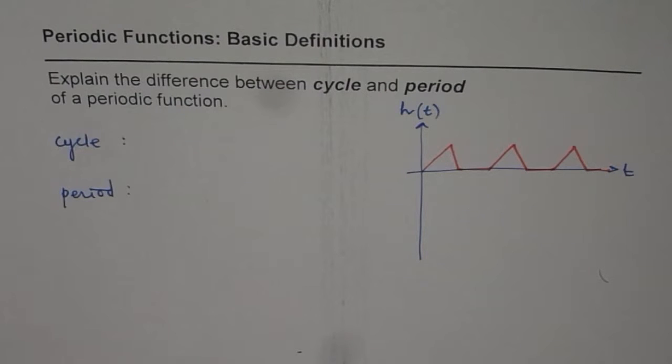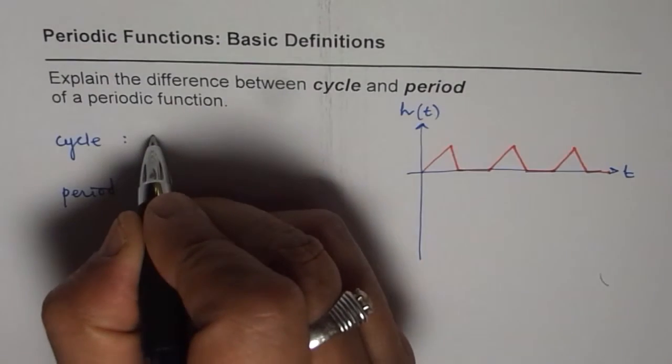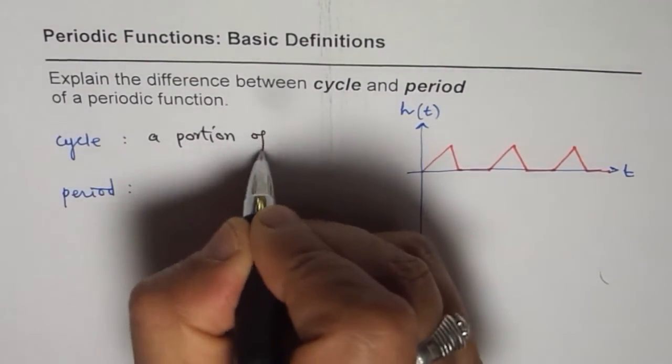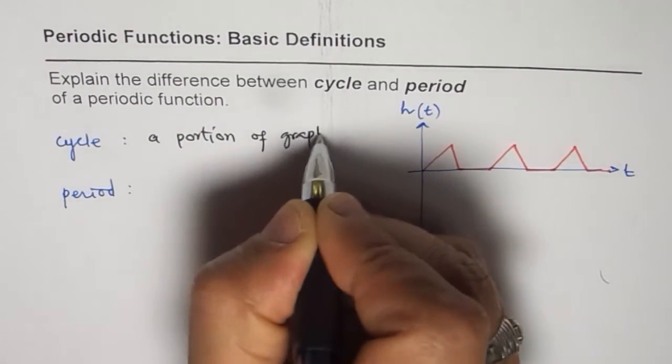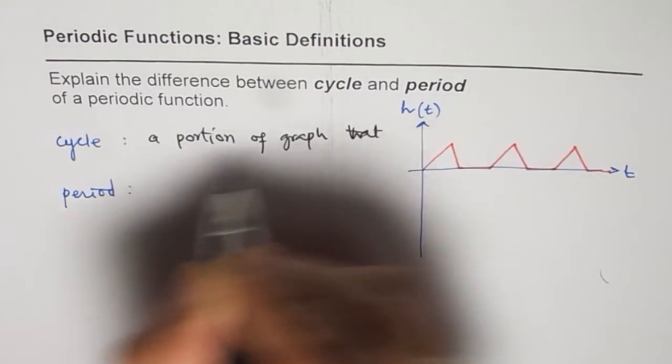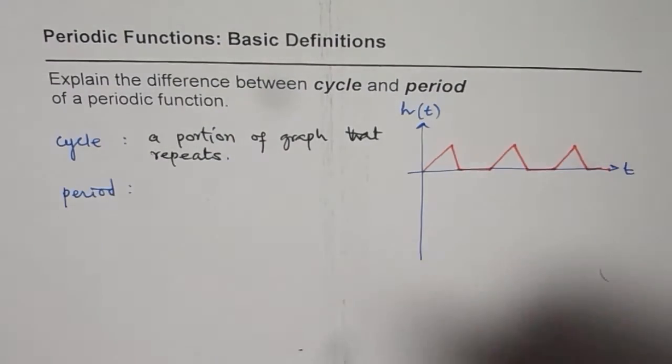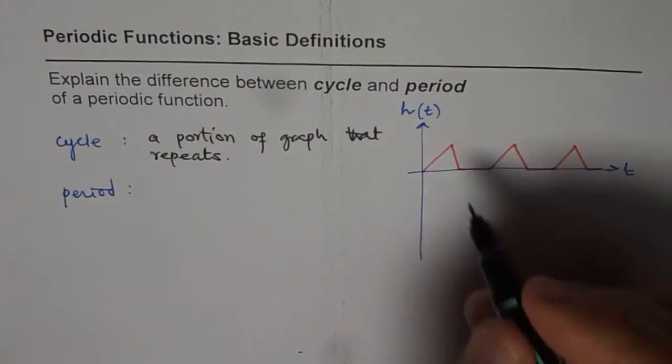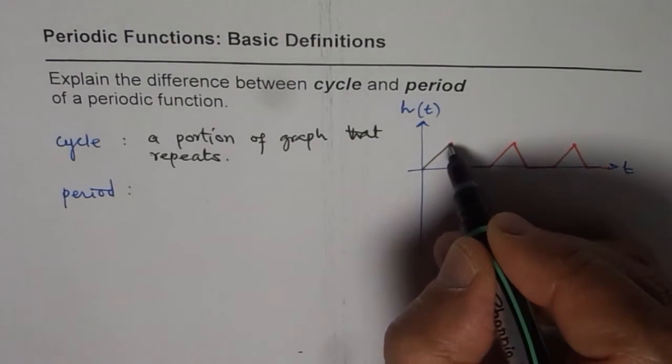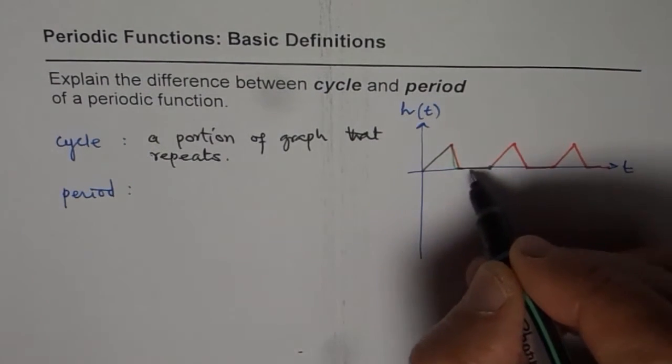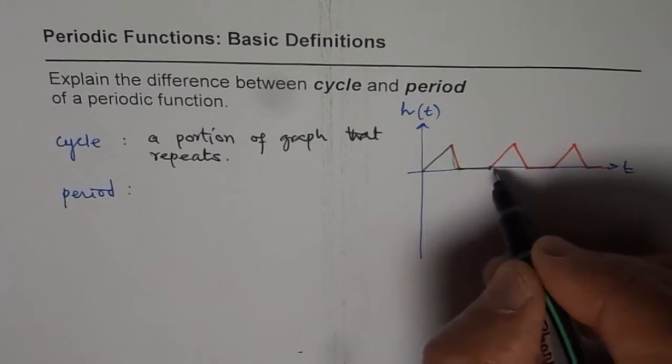Cycle is a portion of graph that repeats. That is a cycle. So what is repeating here? What we see here is this portion of the graph from here to here repeats. So that portion of the graph, the complete thing, is the cycle.